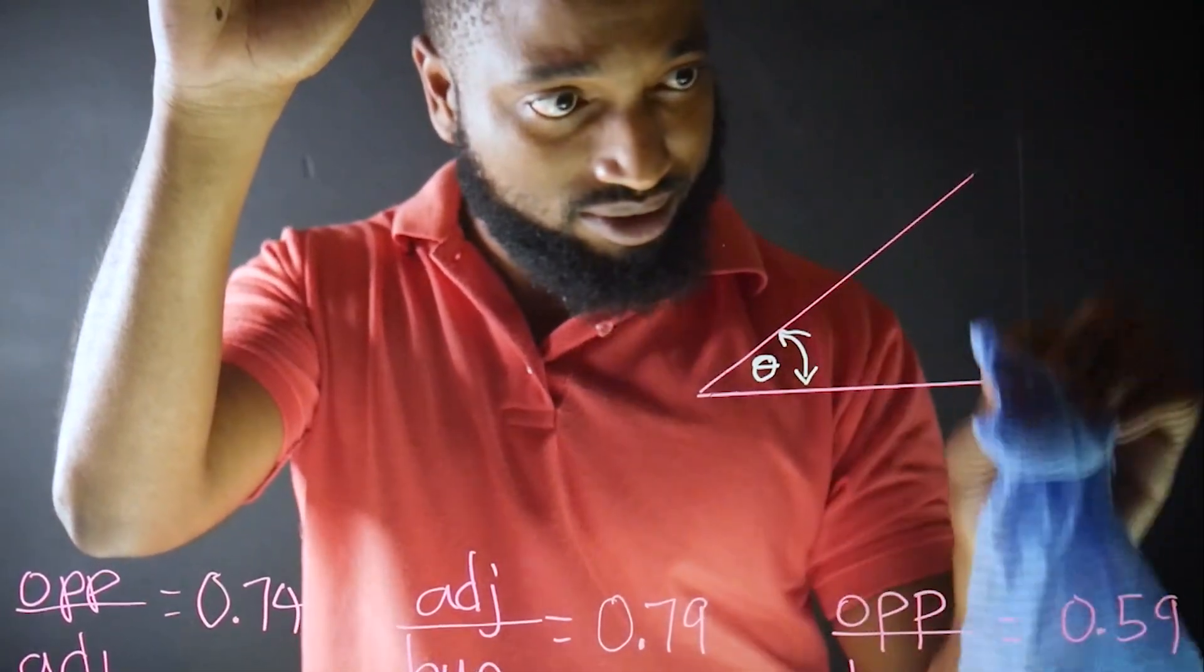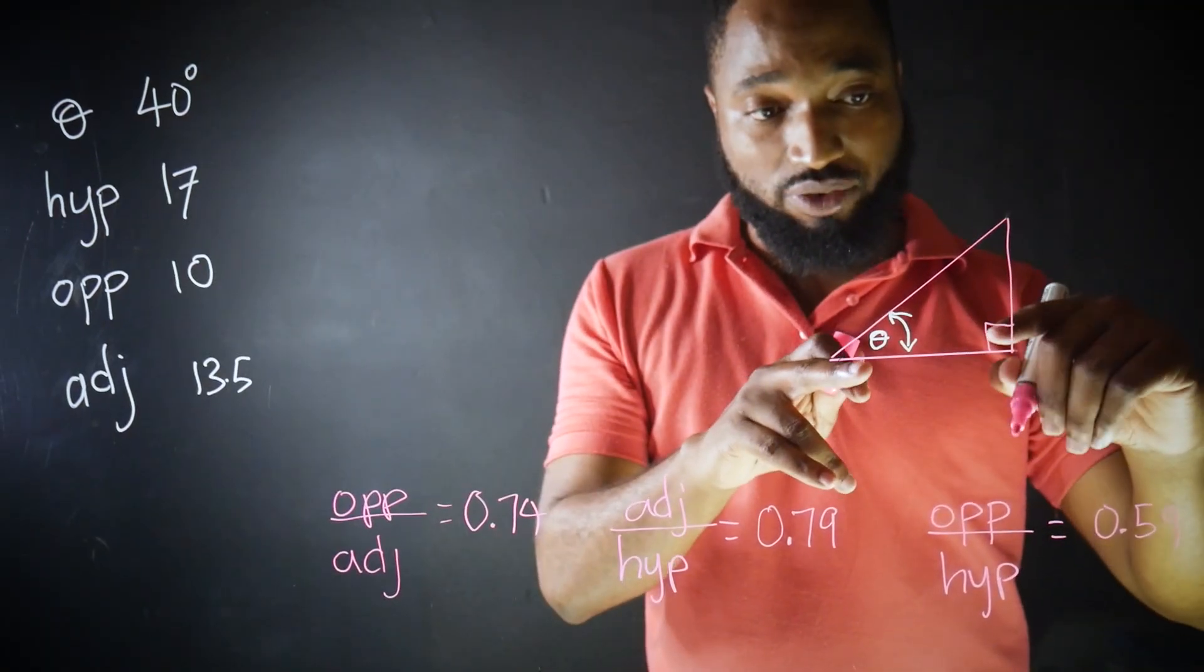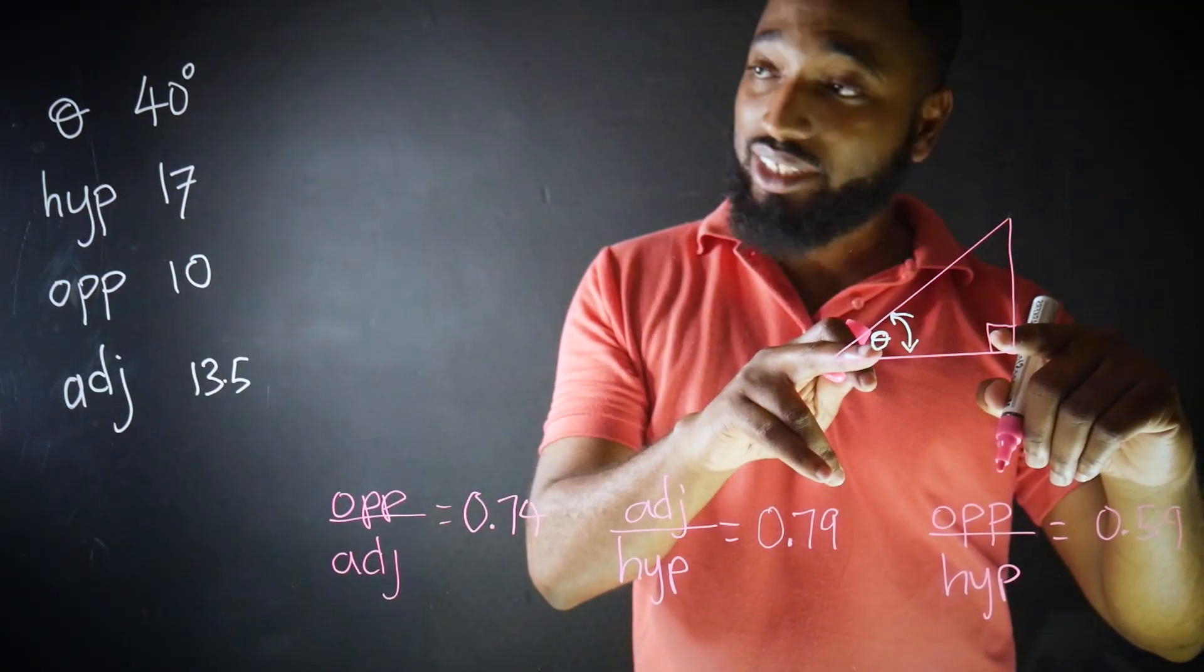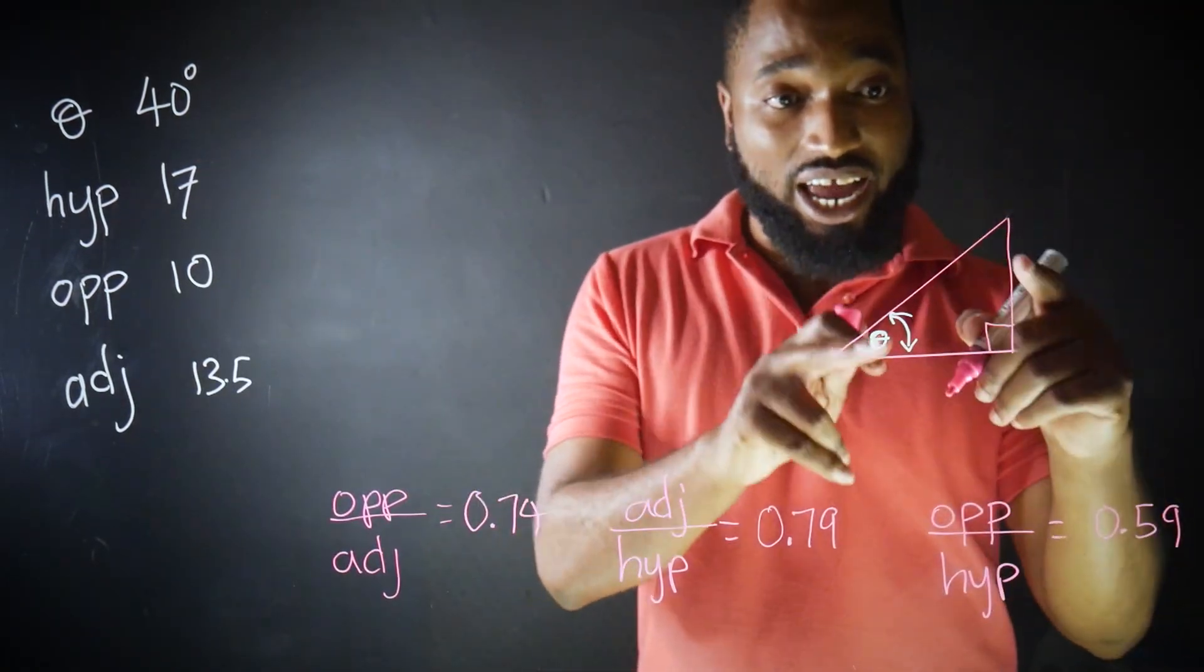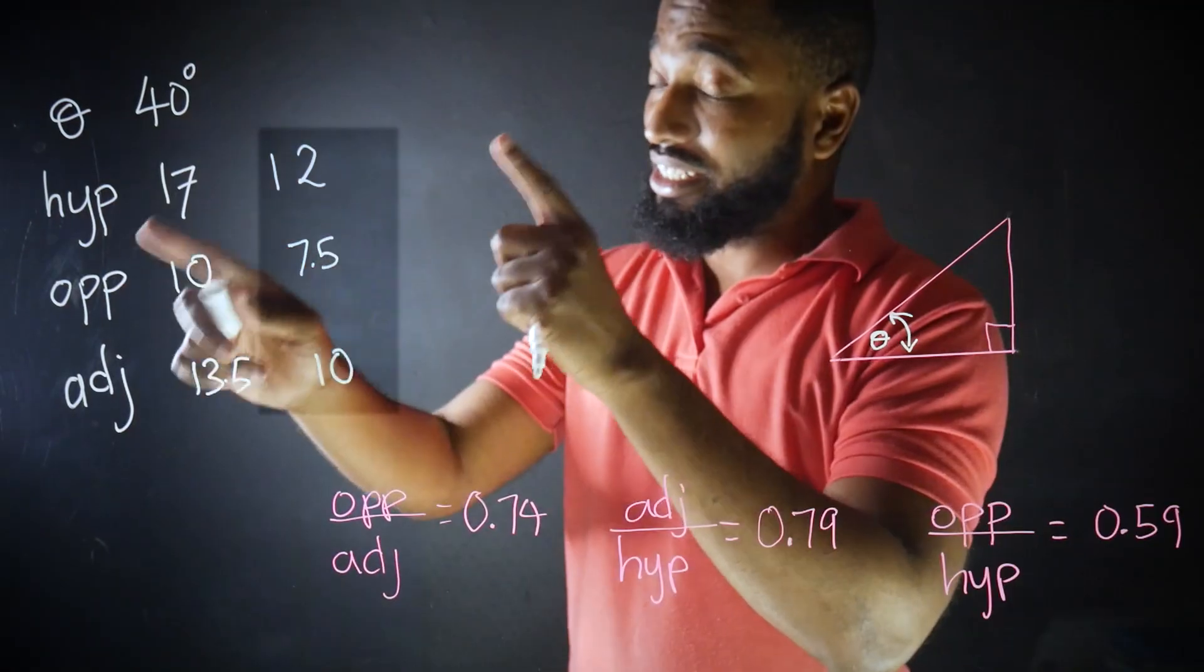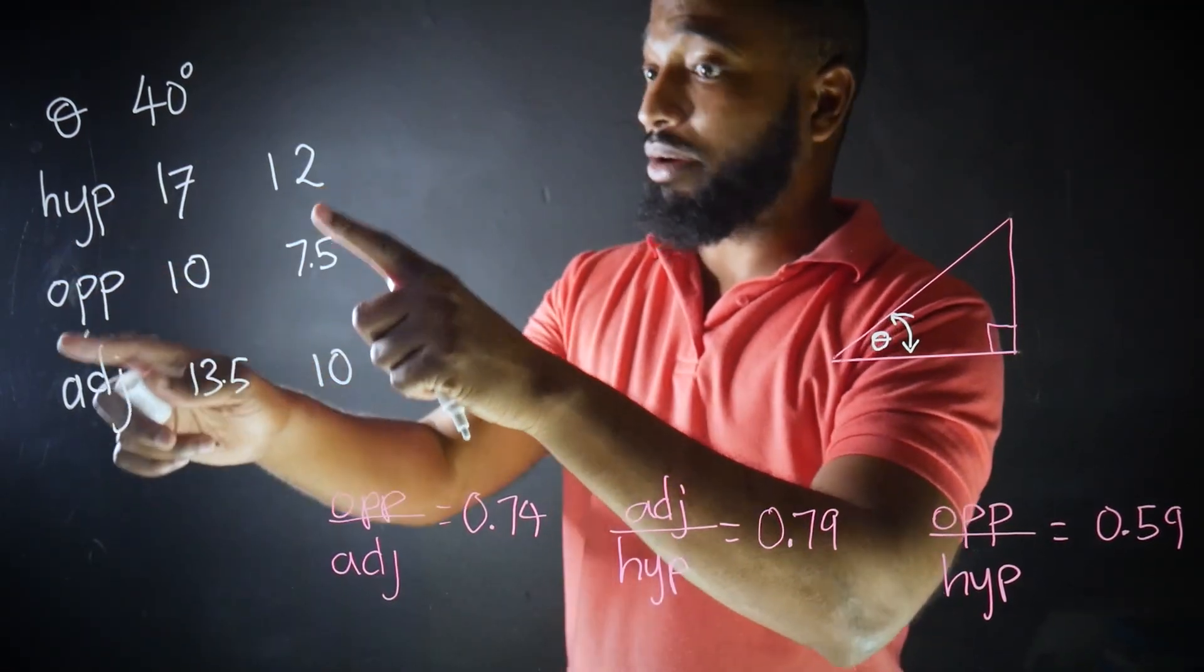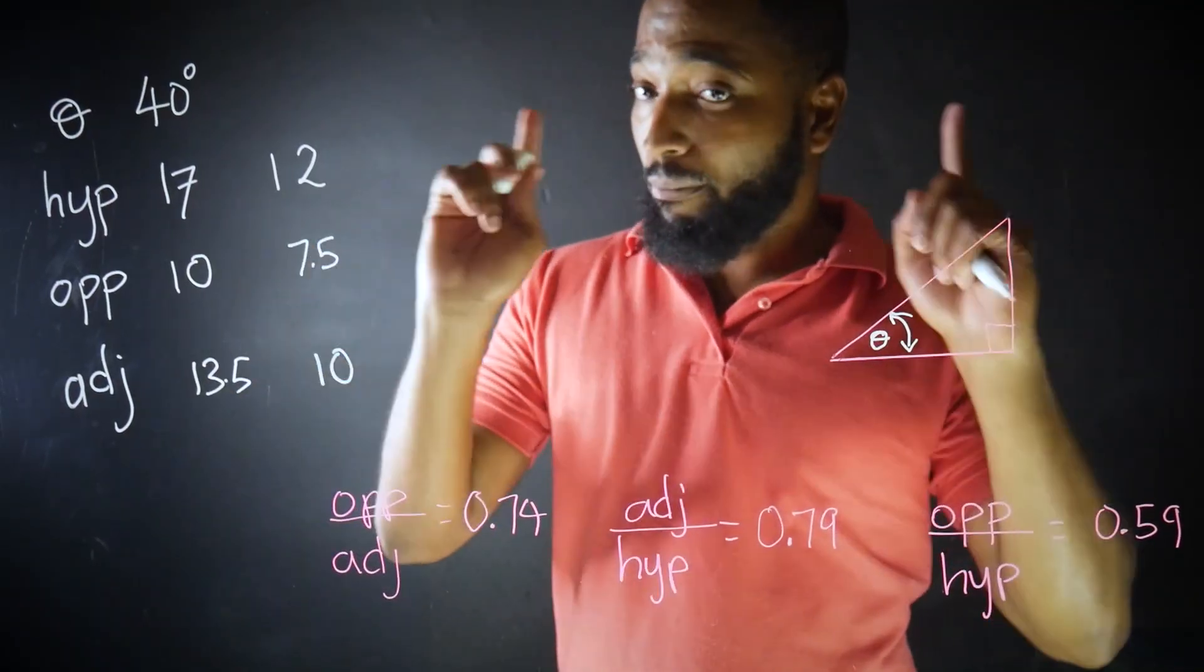And made the triangle shorter, so that it remains a right angle triangle with the same theta, with the same angle here being 40 degrees, the sides of the triangle will change. The values will change to these new values. Hypotenuse being 12, opposite being 7.5. They got smaller, but...